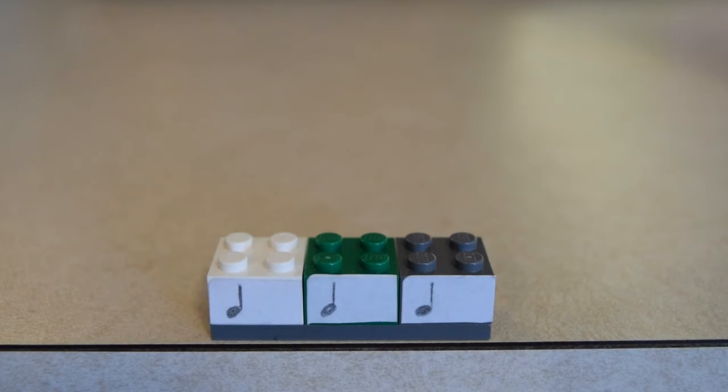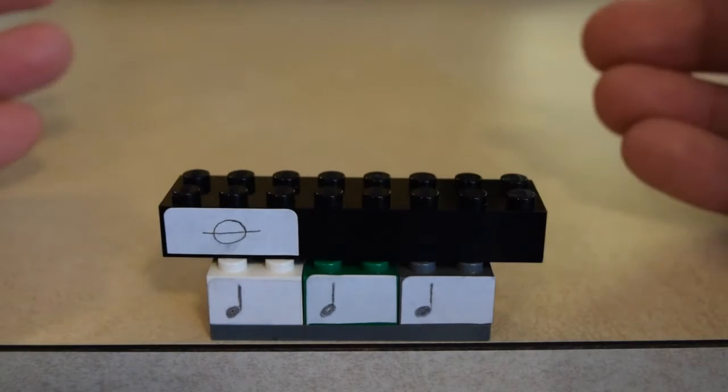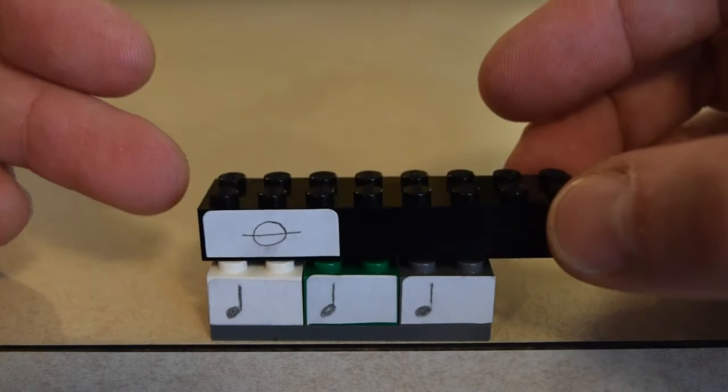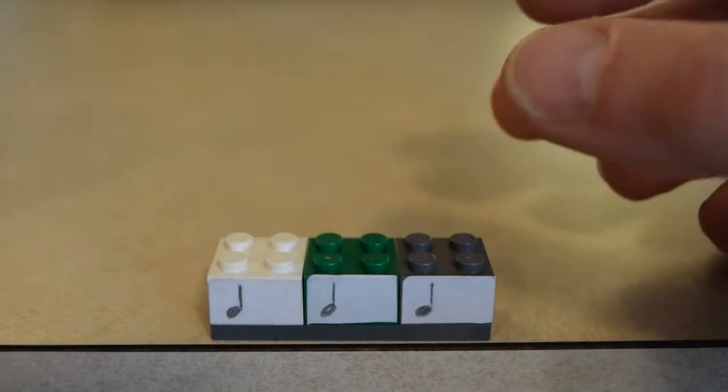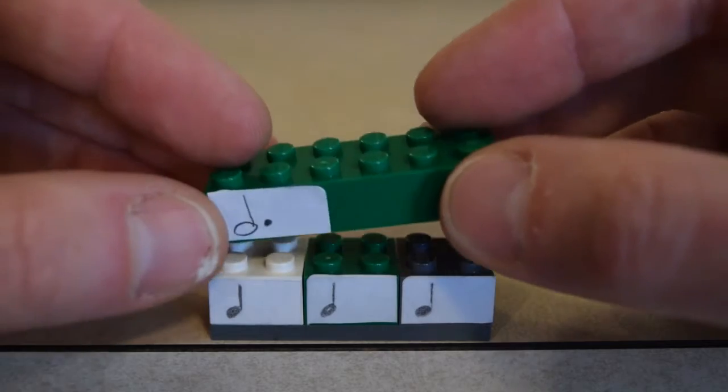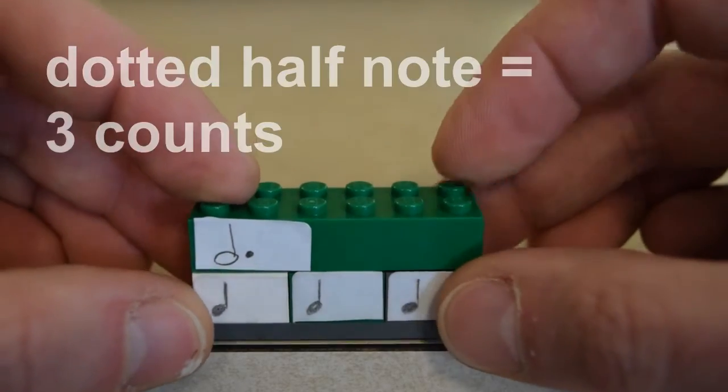Another interesting thing about 3-4 is that we cannot use any whole notes in this piece, because a whole note's four counts, and it won't fit on there. The longest note duration we can use is the dotted half note, which is three counts.